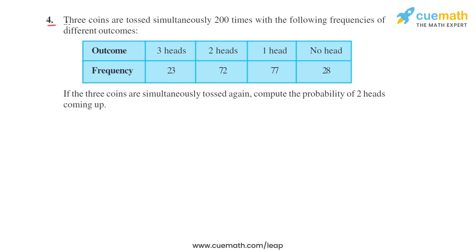In the fourth question, three coins are tossed simultaneously 200 times with the following frequency of different outcomes: three heads appeared 23 times, two heads appeared 72 times, one head appeared 77 times, and no head appeared 28 times. If the three coins are simultaneously tossed again, compute the probability of two heads coming up.